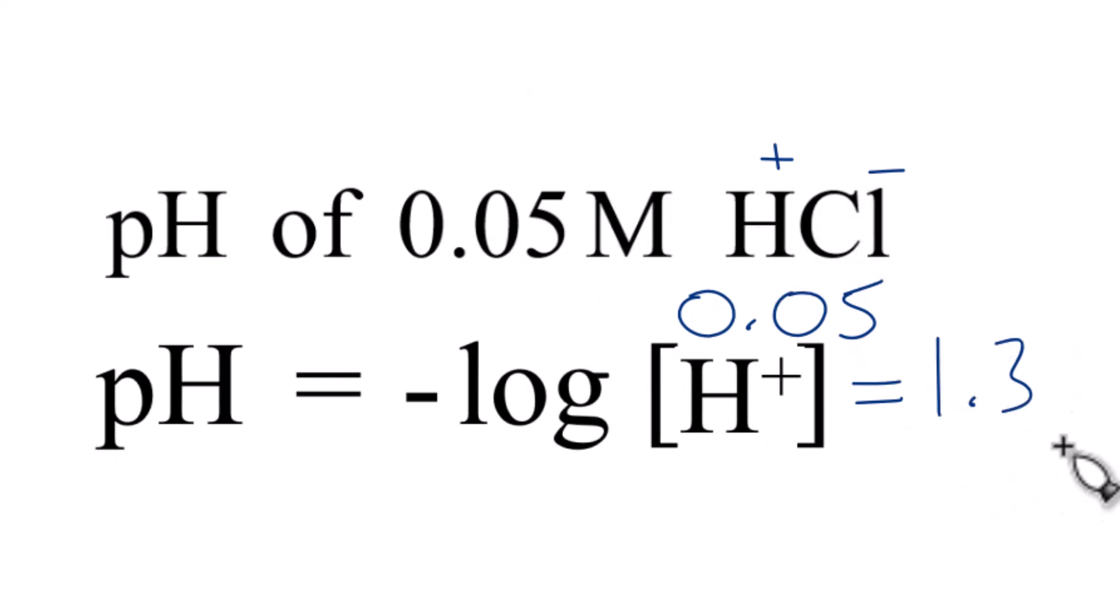And that's kind of what we would expect. HCl, that's a strong acid, so we would think the pH would be below 7 since it's an acid. That's it.